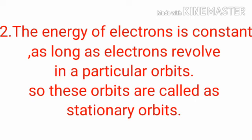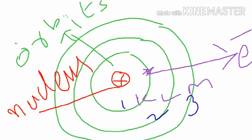Okay, these two are explained by taking one example. Now, in this diagram, the middle red color one is called as nucleus.